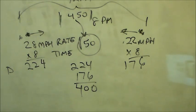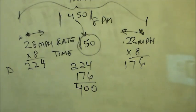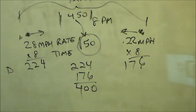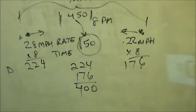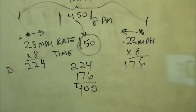So those are some of the distance, rate, and time problems. You could come into contact with them on the SIFT test — the United States Army SIFT test — the Navy, Marine Corps, Coast Guard ASTB, or the Army, Air Force AFOQT. Any comments, questions, or concerns, just shoot me a message in the message box. Thanks for watching.